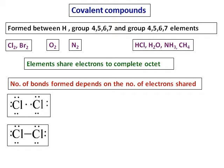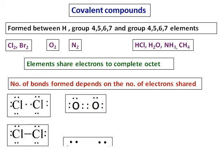In the case of oxygen, each oxygen has six outer electrons and needs two more. Hence, in between two oxygen atoms we have two pairs of electrons, and a double bond is formed.